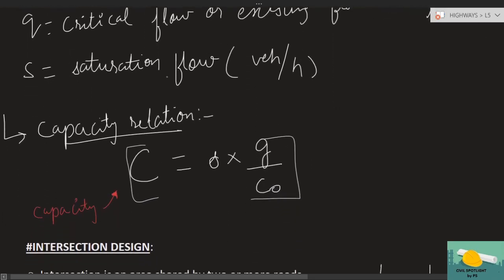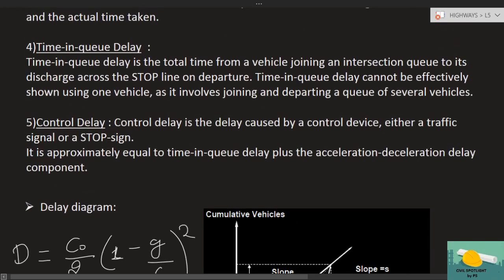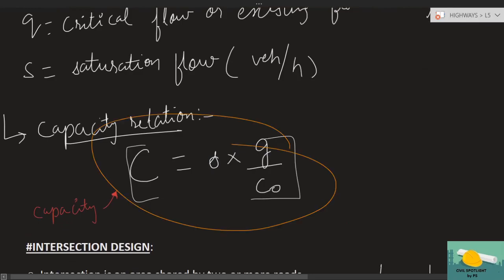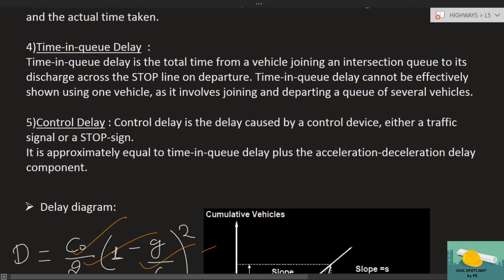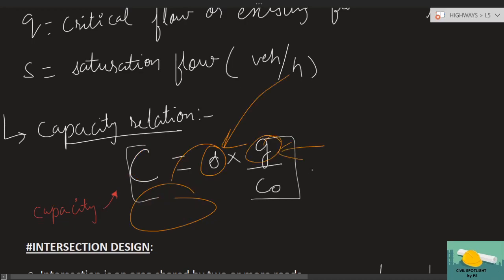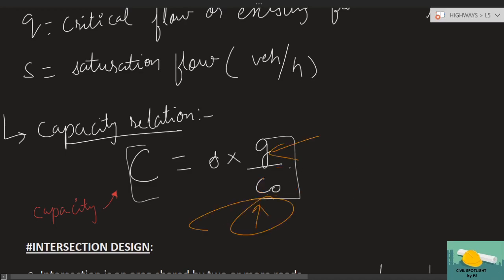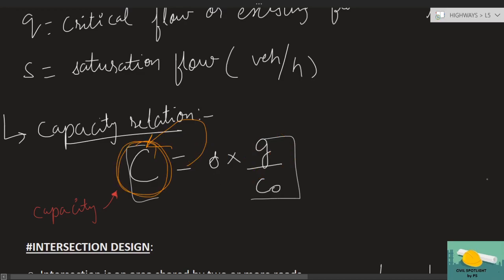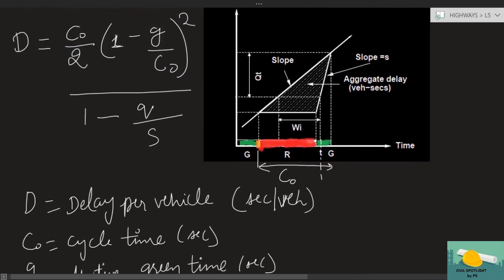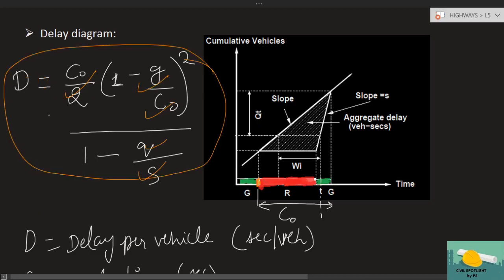The small numerical we saw was the capacity relation. You might wonder why I am explaining so much for one small equation — it is because I believe this topic, or at least part of it, could appear as a question. So at minimum the formula should be memorized. Capital C is the capacity in vehicles per hour, equals S (saturation flow in vehicles per hour) multiplied by G (effective green time) divided by C-naught (optimum cycle length). Given the optimum cycle length, effective green time for a particular direction, and saturation flow, you can calculate the capacity of that intersection. The exam may ask for maximum delay per vehicle, and you will need to substitute all values into the formula.